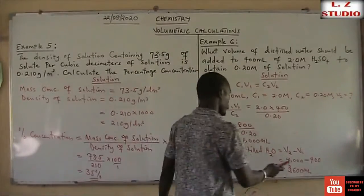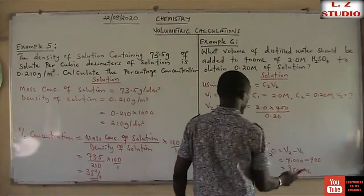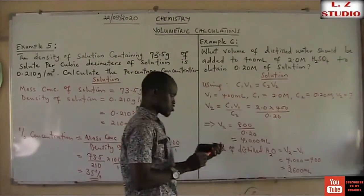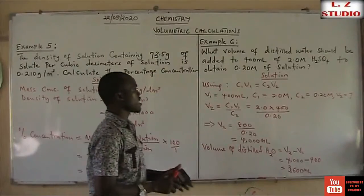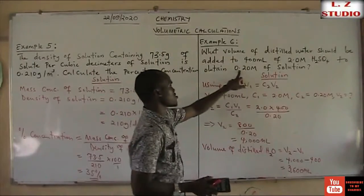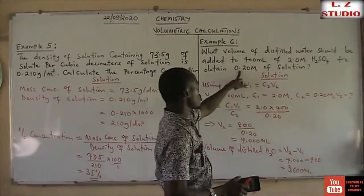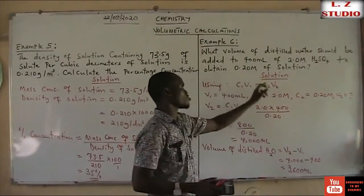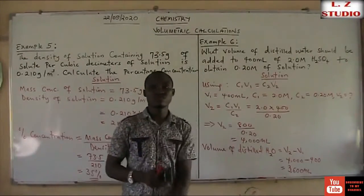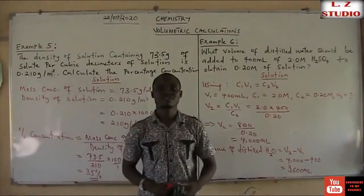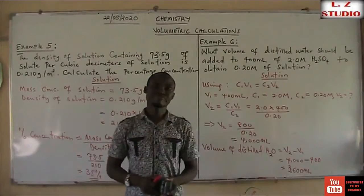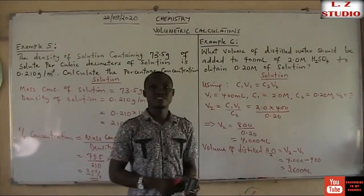3600 mL is the final volume of distilled water that must be added in order to get the concentration of 0.20 molar solution. I hope this helps. Thank you very much.